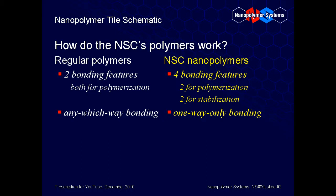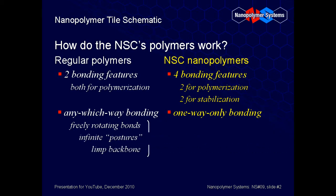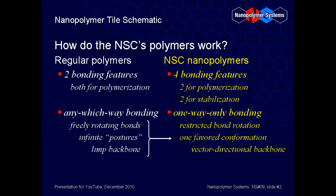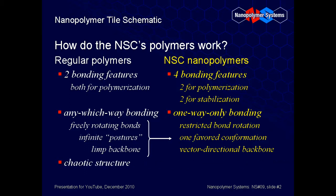In other words, the freely rotating bonds, infinite postures, and limp backbones of regular polymers are transformed into restricted rotation bonds and single conformation polymers with vector directional backbones. Bottom line: the conformational chaos fundamental to regular polymers is replaced with inherent nanostructure in NSC polymers. The specific nanostructure is 100% derived from the choice of monomers used.